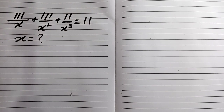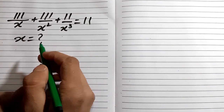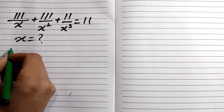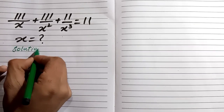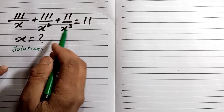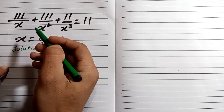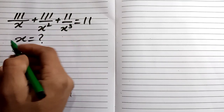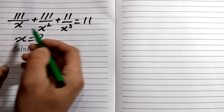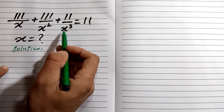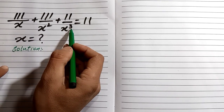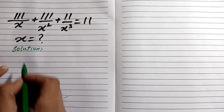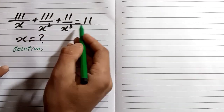Hello everyone, welcome to another video. In this math problem on exponential equations, we are finding the value of variable X. To solve this equation we have two or more steps. First of all, we will multiply by the LCM, which is x^3, taking the LCM on both sides to find the equation.